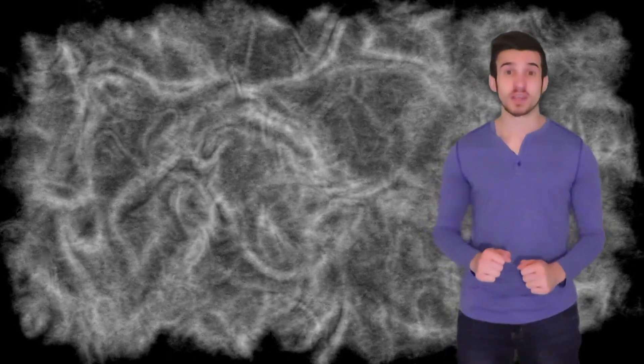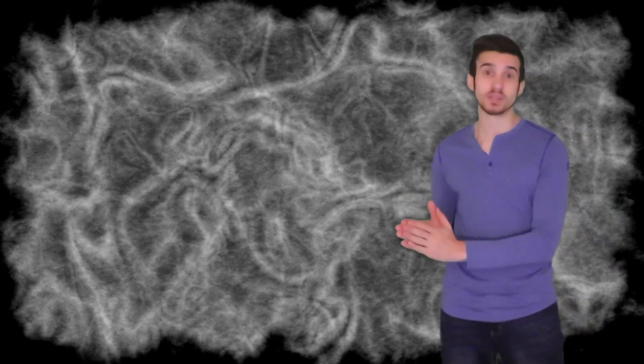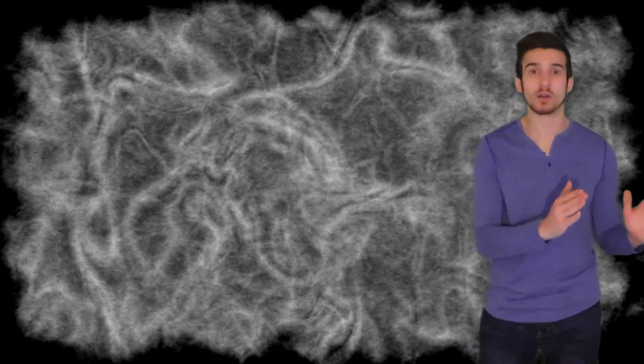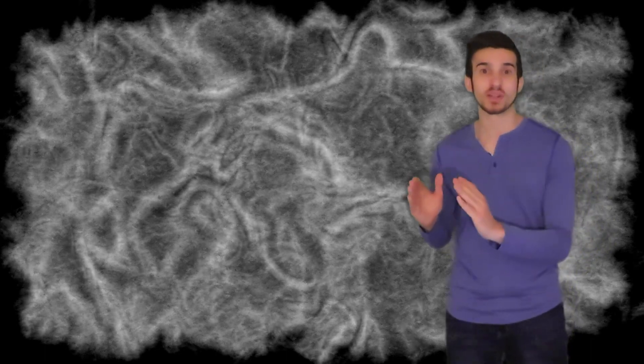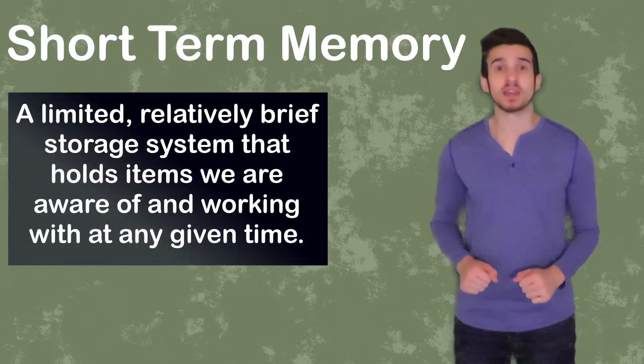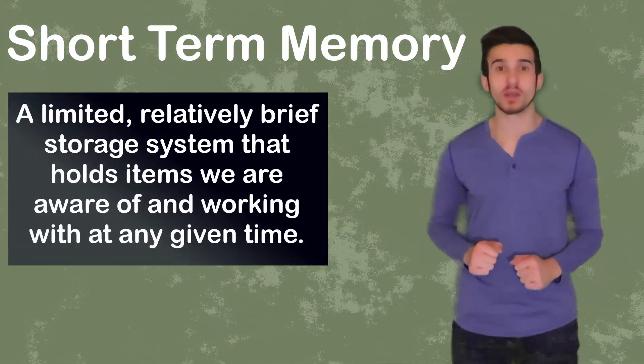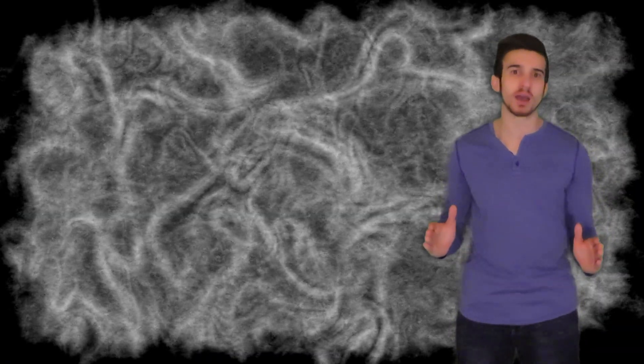Once information is in our sensory registry, one of two things can happen. We can disregard the information, or we can give more attention to the information. When we disregard the information, we simply forget it and move on. When we give attention to a certain stimulus, it goes to our next stage of memory, which is going to be our short-term memory. Our short-term memory is going to be a brief storage system that holds items that we are aware of and working with at any given time. These are things that we are consciously aware of and currently thinking about.